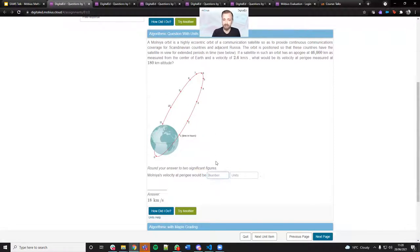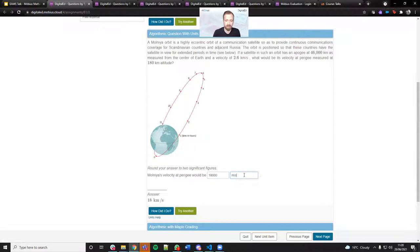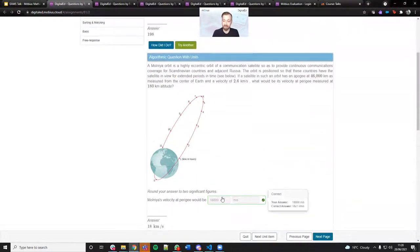We've just demonstrated that when you press try another, it regenerates a question. So we could do 18,000 metres per second there. I'll press how did I do. We can see that's graded correctly, because that is an equivalent response.